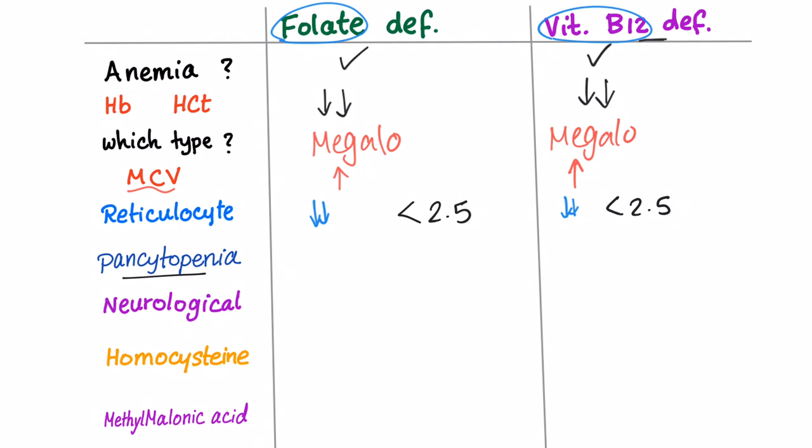Pancytopenia. Yes, it may be present in both of them. Why? Because they are megaloblastic. Not just macrocytic. Specifically, they are megaloblastic. So pancytopenia could be there in both.